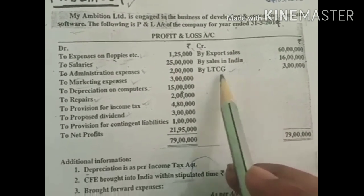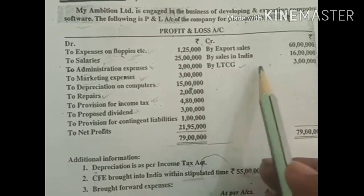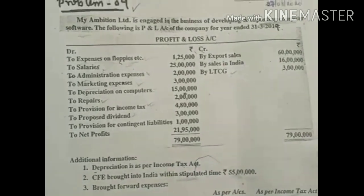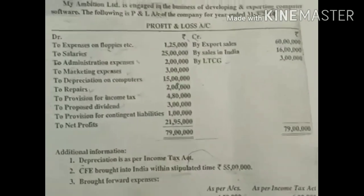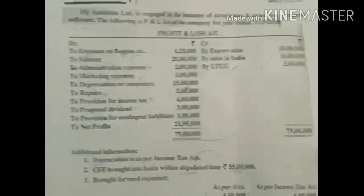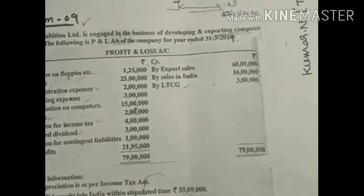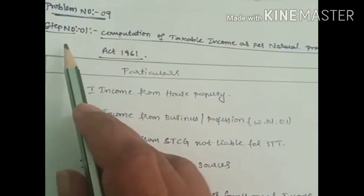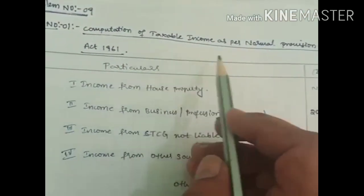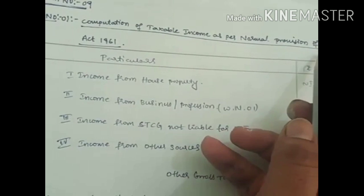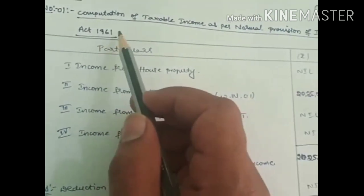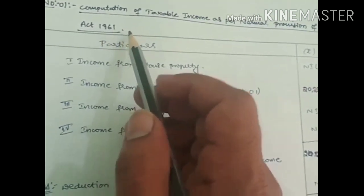Since this is long-term capital gain liable for STT, any excess over 1 lakh is taxable at 10% and must be computed separately. Let's see the solution.